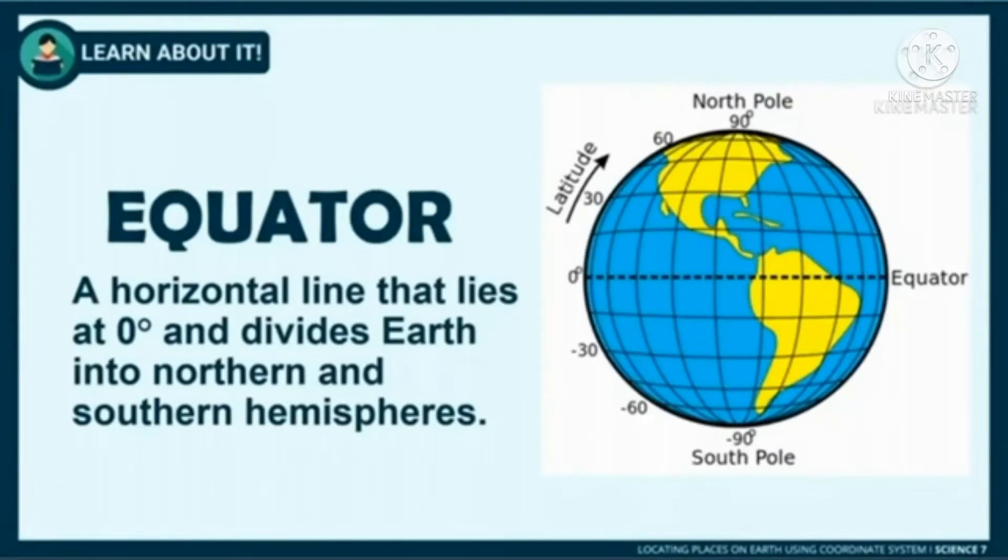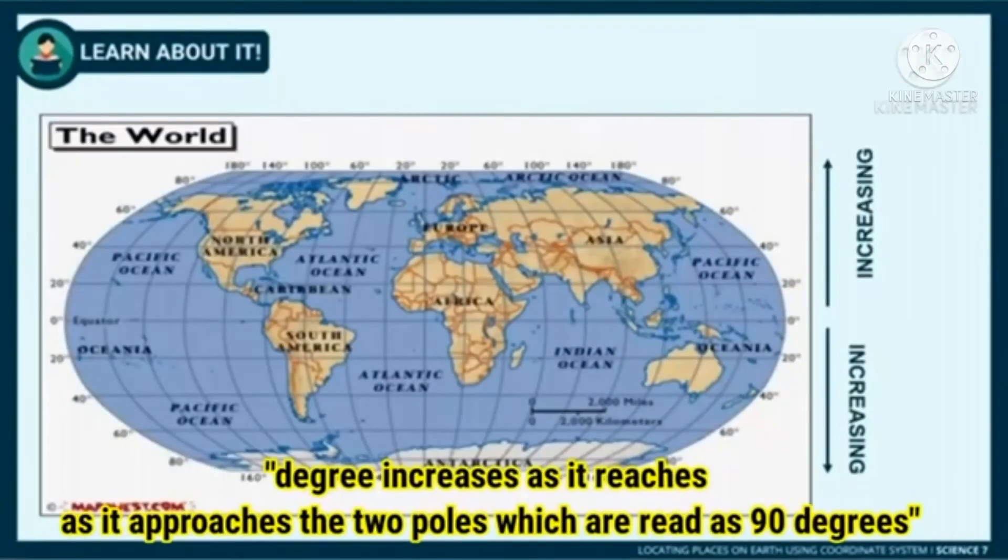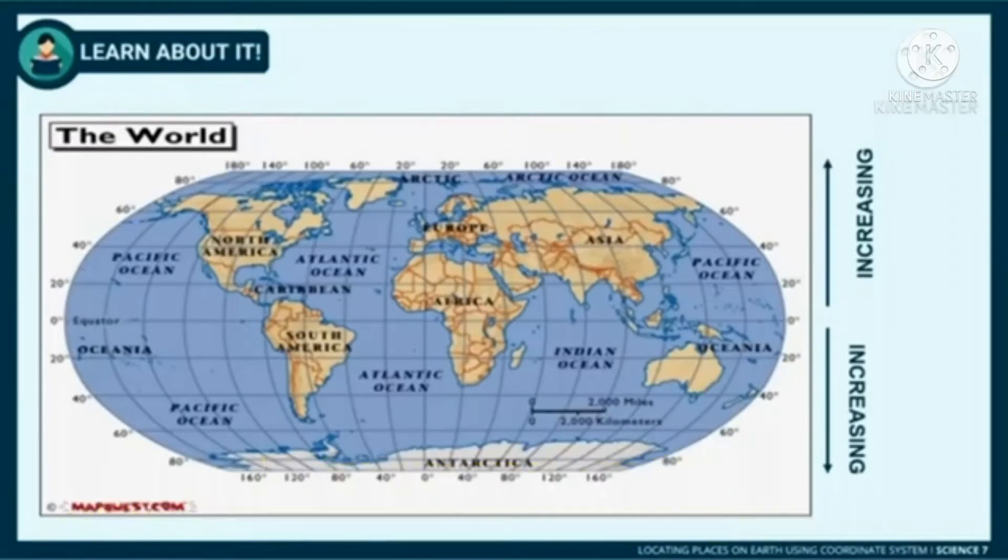The latitude which cuts the Earth in half dividing the northern and southern hemisphere is called the equator. As a reference point, the equator is read as 0 degree latitude. The degree increases as it approaches the two poles which are read as 90 degrees: 90 degrees north latitude or 90 degrees south latitude.